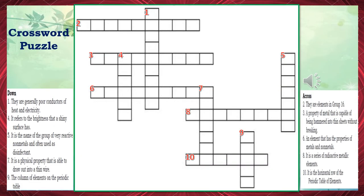Across, number 2: They are elements in group 16. What is the answer? The answer is chalcogen. Number 3: A property of metal that is capable of being hammered into thin sheets without breaking. The correct answer is malleable.